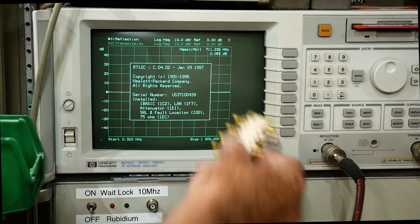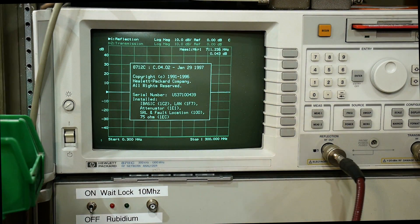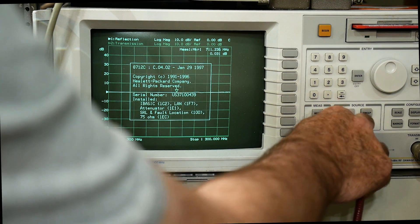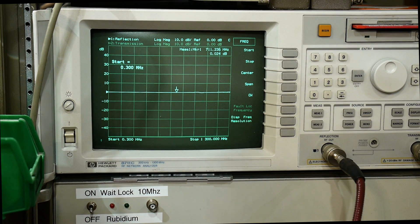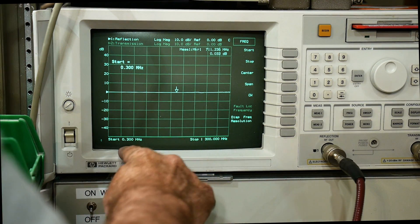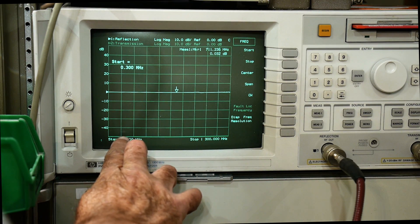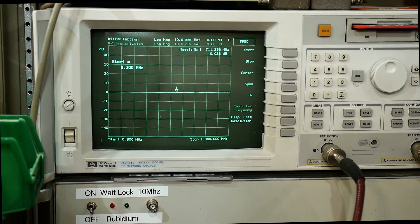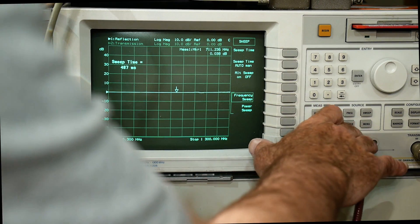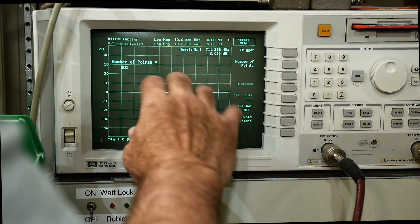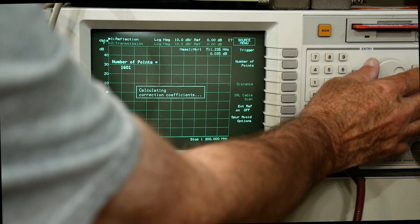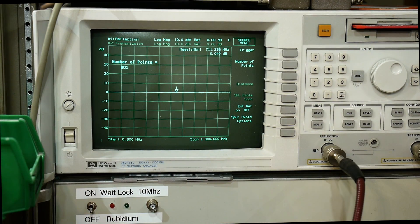We're going to be measuring this VMA test board that I made, so we need to calibrate. Let's set up some things here. Let's do frequency, we'll do the full sweep, 300 kilohertz to 1.3 gigahertz. We will set it for 801 points.